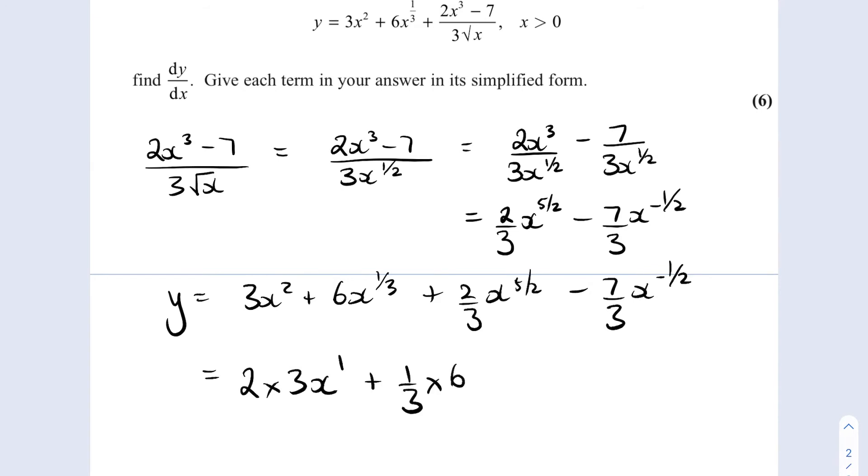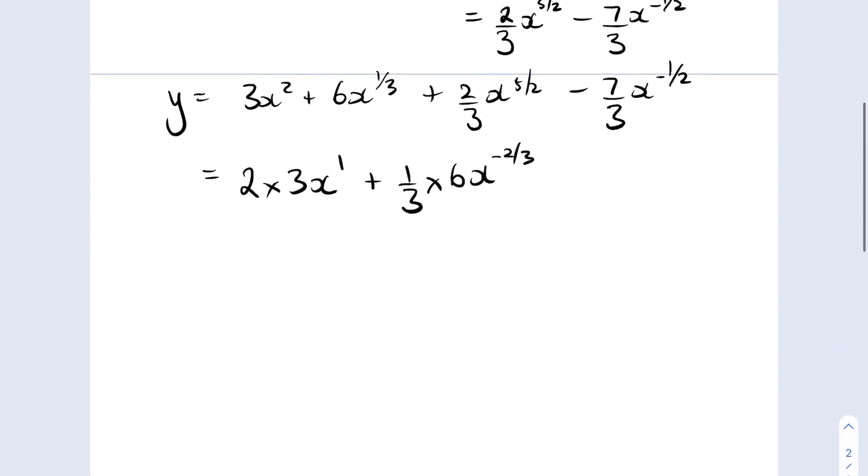So one third minus one is minus two thirds. I'm going to tidy these up in a moment but I'm doing this so that you can see what happens with these fractions specifically in the last two terms. So 5 over 2 comes down multiplied by two thirds and then take one off of the power. 5 over 2 take away 1 is 3 over 2.